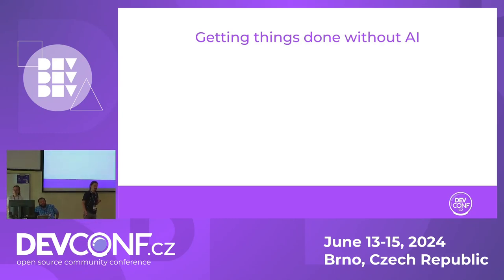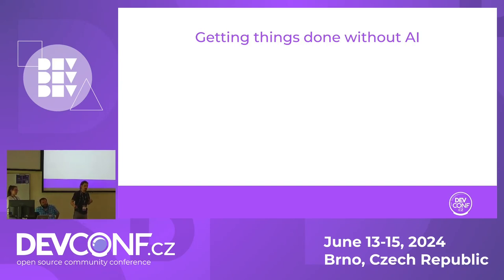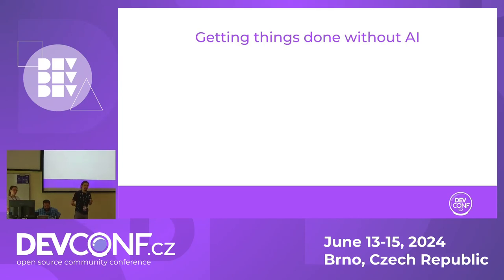Technical writing is essentially about providing information to people so that they can do things easily and effectively with technology — typically with software in our case. The recent advent of AI tools and large language models has definitely been a big watershed moment, not incomparable to the introduction of search engines back in the 1990s.